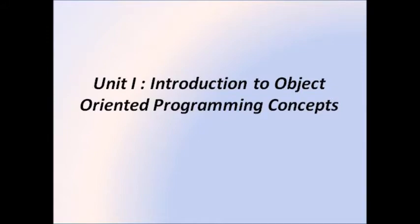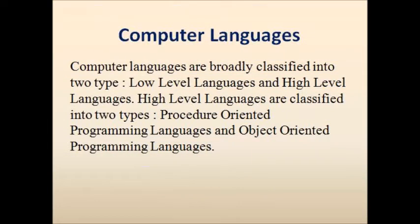We can communicate with a computer only if we know computer language. Computer languages are broadly classified into two types: low level languages and high level languages. Low level languages have certain limitations — they were very difficult to understand and were machine dependent. Therefore, high level languages have been developed. They provide a comfortable platform for users to understand and design program logic. High level languages are classified into two types: procedure oriented programming languages and object oriented programming languages.